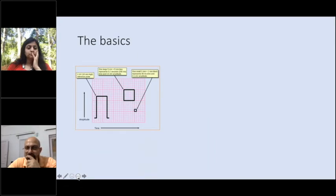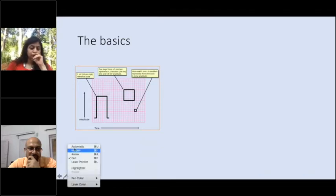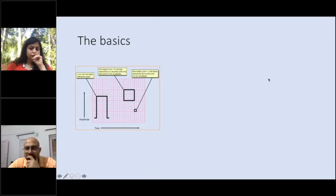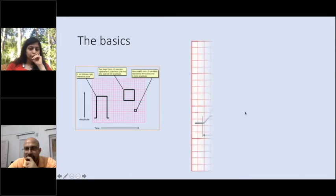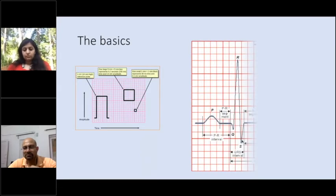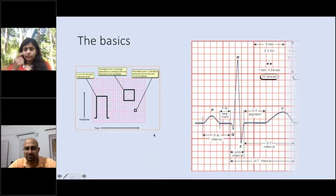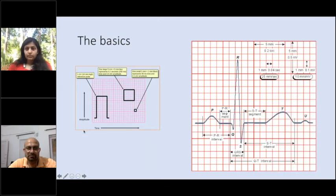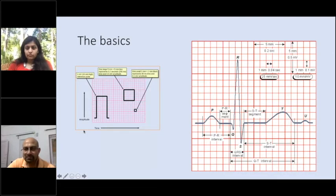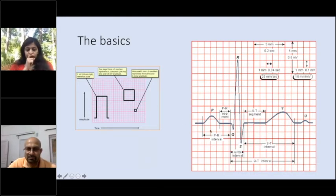You can see there are small squares and a big square composed of five small squares. Each small square horizontally translates to 0.04 second and vertically to 0.1 millivolt. Let's look at a basic electrocardiogram tracing and the different waves. We have a P wave which signifies atrial depolarization, then we have a PR segment.